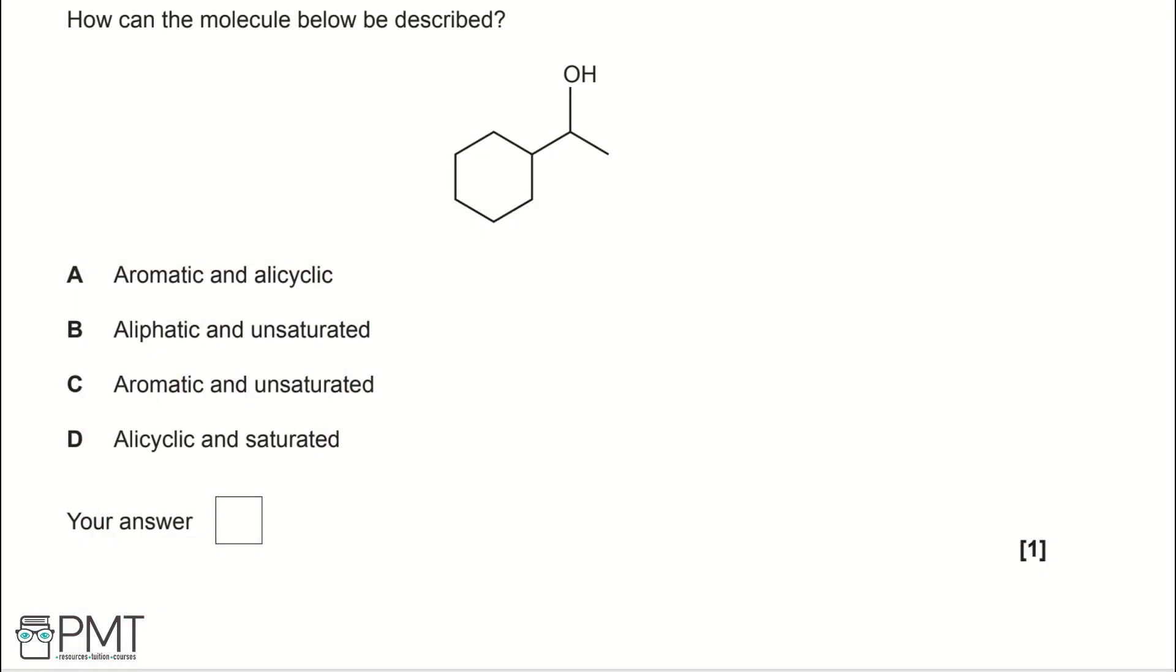How can the molecule below be described? A: aromatic and acyclic, B: aliphatic and unsaturated, C: aromatic and unsaturated, or D: acyclic and saturated. To answer this question, we need to know what each of these words means.